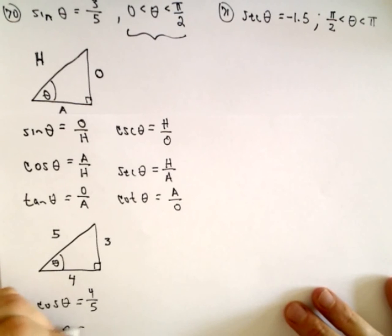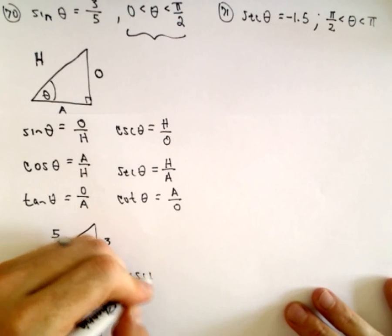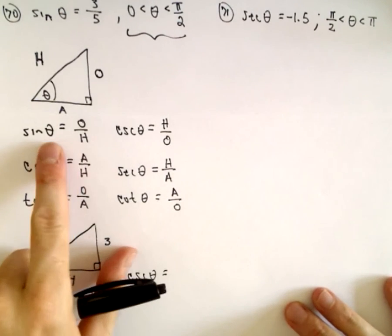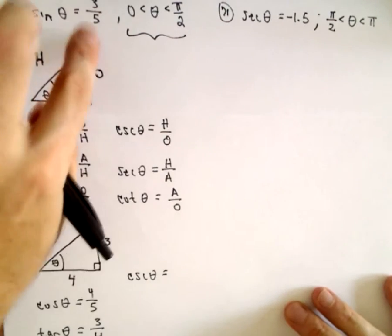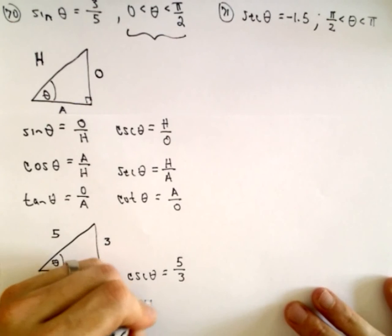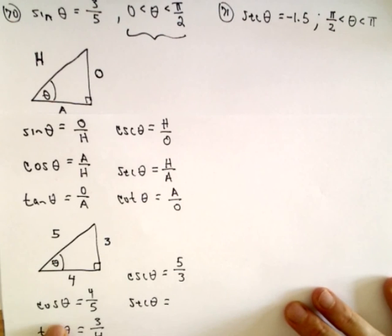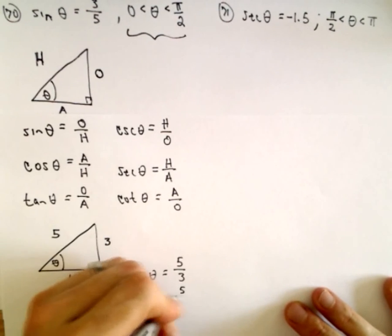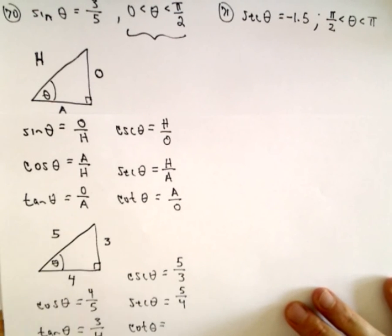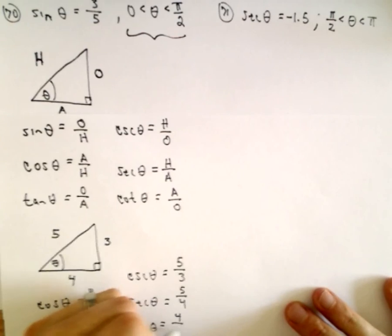Tangent of theta, that's the opposite to the adjacent. Cosecant of theta, there's really nothing to do as long as you know that that's one over sine, so I'll just flip it, I'll get five-thirds. Secant of theta, that's one over cosine of theta, so I'll get five-fourths. And cotangent of theta, that's just going to be four-thirds.